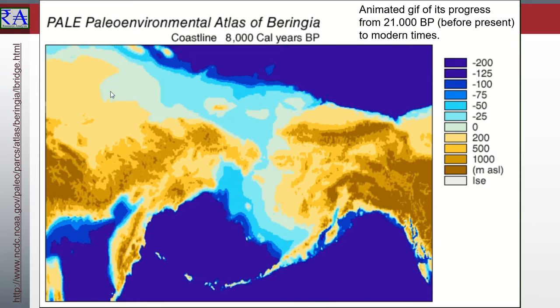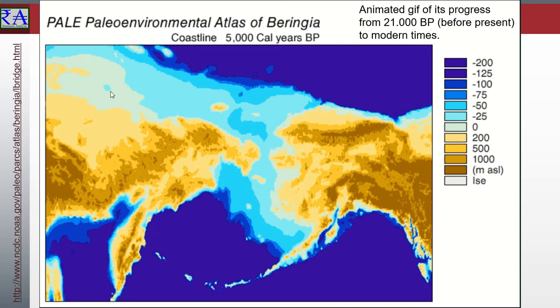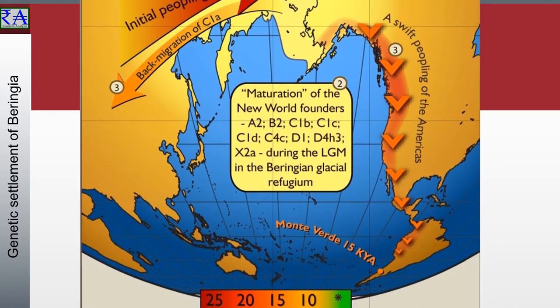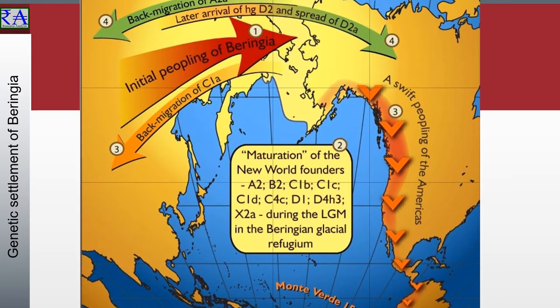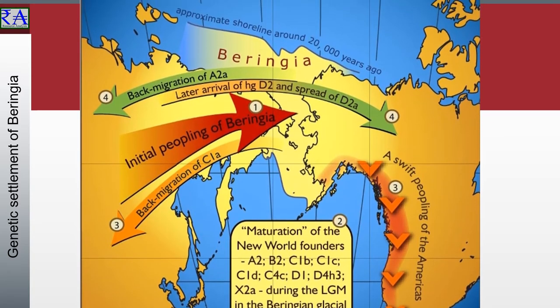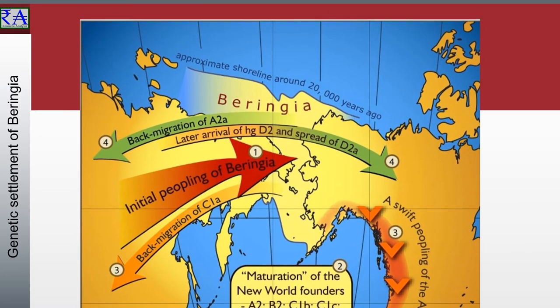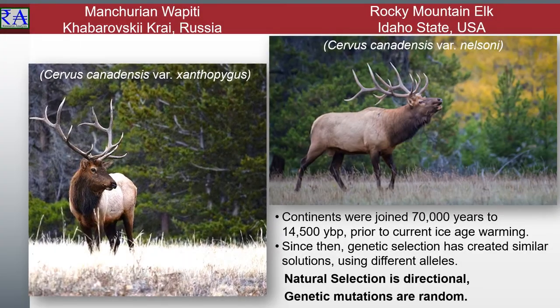Beringia is a land and maritime area bounded on the west by the Lena River in Russia, and on the east by the McKenzie River in Canada, on the north by 72 degrees north latitude in the Chukchi Sea, and on the south by the tip of the Kamchatka Peninsula. This territory was an easily traversed path between these two continents, linking current-day Alaska with the Russian Far East. The connective tissue now under the North Sea was about the size of today's country of Mexico. At that time, 21,000 years ago, the world was in the apex of the Ice Age, and the elk species were connected as a series of populations along this continental connection zone.